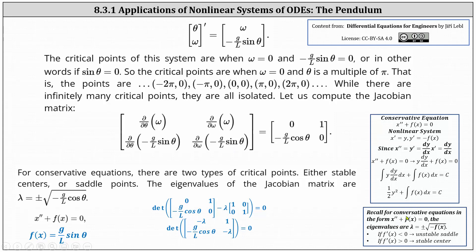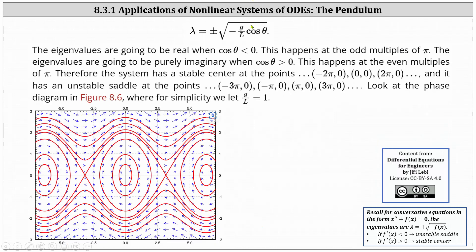Referring to our notes for conservative equations, there are only two types of critical points: stable centers or saddle points. We determine which type by finding the eigenvalues of the Jacobian matrix, which results in lambda equals plus or minus the square root of negative g divided by l cosine theta. The eigenvalues will be real when cosine theta is negative, which happens at odd multiples of pi, and purely imaginary when cosine theta is positive, which happens at even multiples of pi.